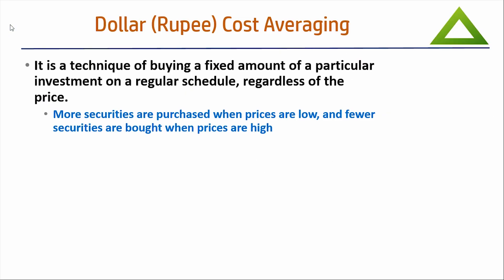First we start with rupee cost averaging. Originally it was known as dollar cost averaging. When it came to India it was known as rupee cost averaging, and nowadays in mutual funds we have lost this name completely — it is known as SIP. We now have SIPs going on in equity mutual funds and you can also do equity SIP, which has also been a wonderful development.